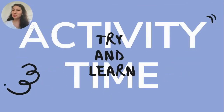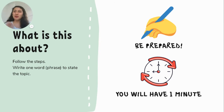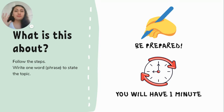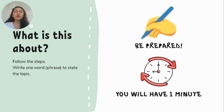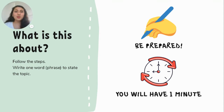So, activity time! We are going to try and learn a little bit about this. The first text is going to be a conversation. You need to follow the three steps we just talked about: first, read quickly the entire conversation; second, ask yourself what is it about; and third, write one word or one phrase — just right, just in the middle, not too general, not too specific. Be prepared with a pencil and a piece of paper because you have one minute. Let's start.